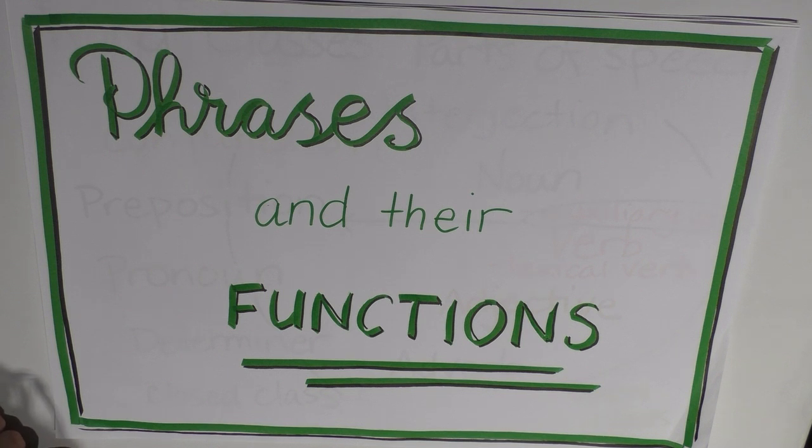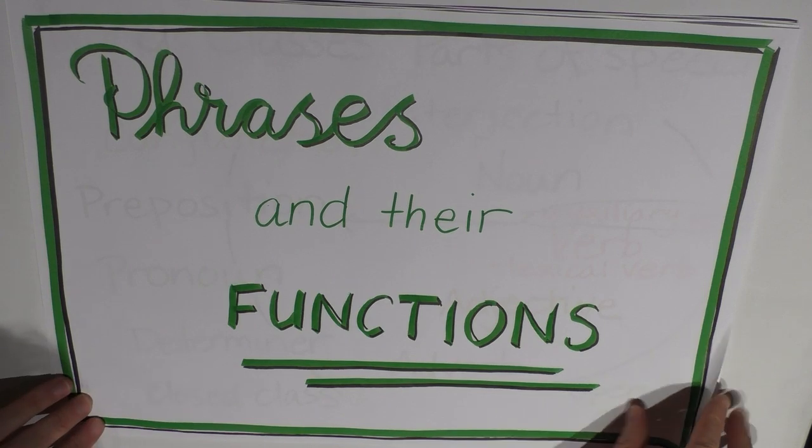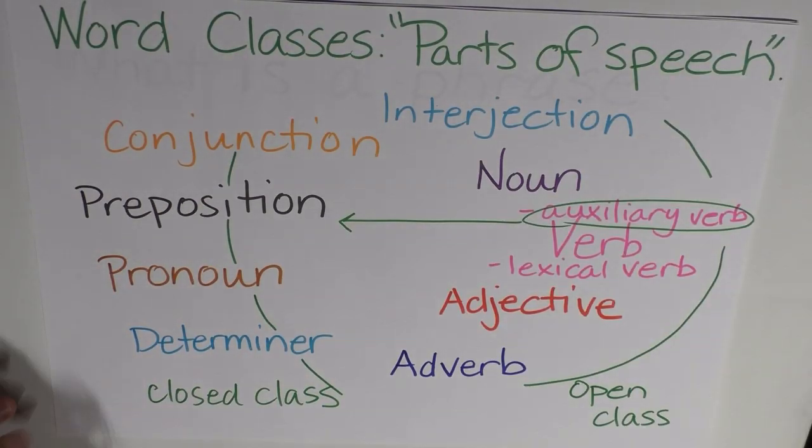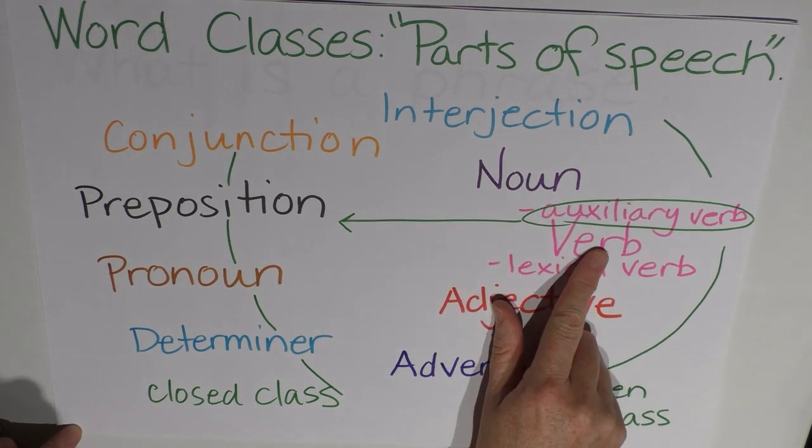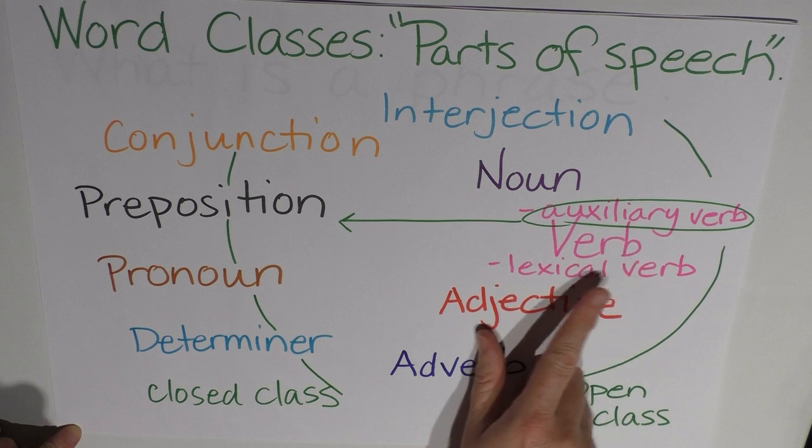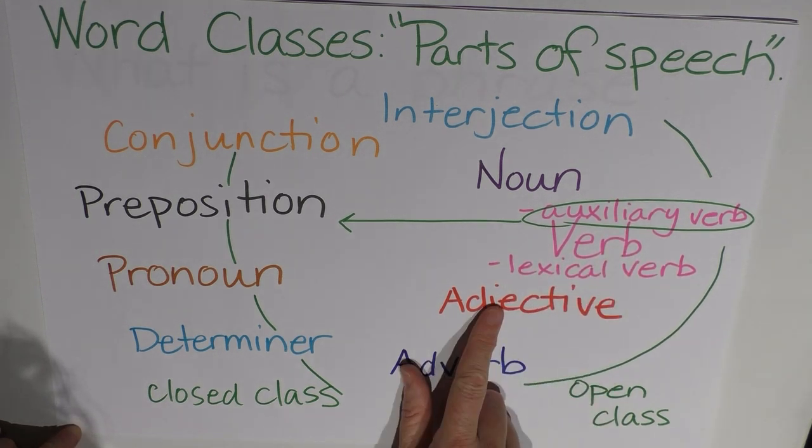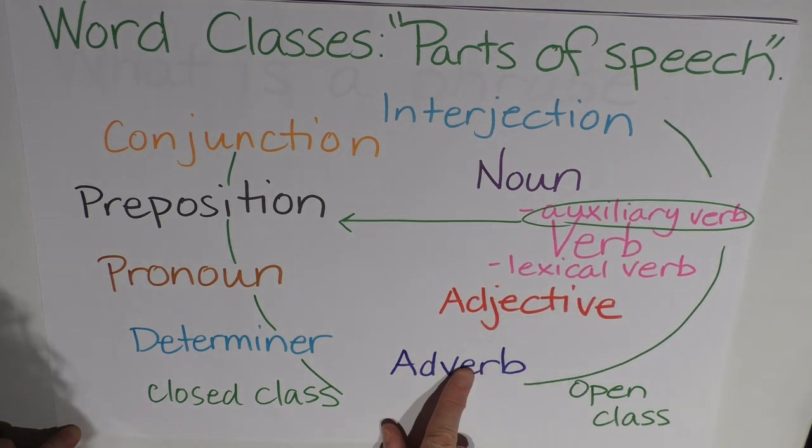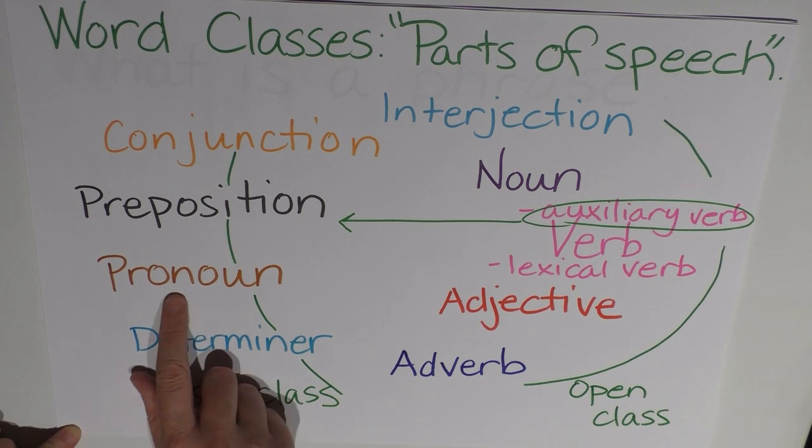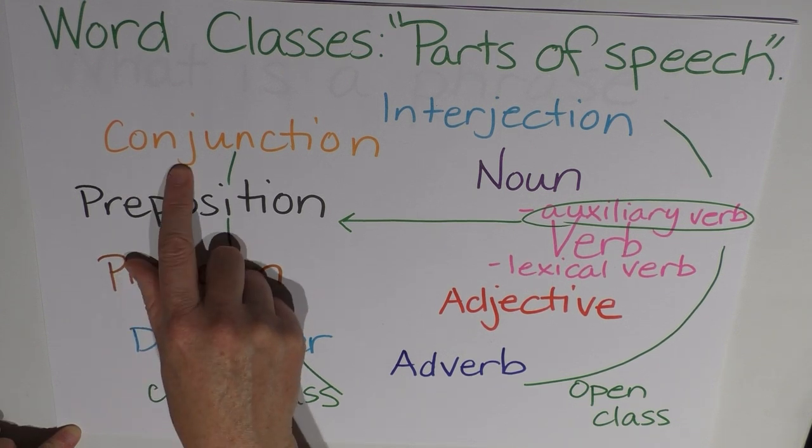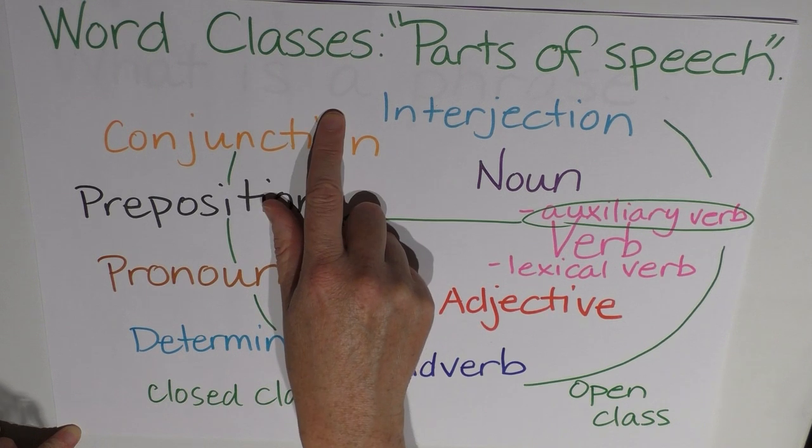So in the last section we looked at the different word classes and how to identify them. And I have them here, I'm sure you'll recognize the paper. These word classes were the noun, verb, including the auxiliary verb and the lexical verb, the adjective, the adverb, the determiner, the pronoun, preposition, conjunction and interjection.